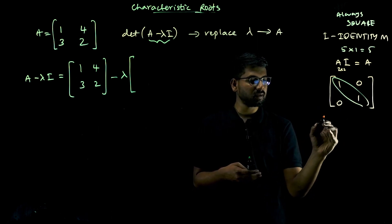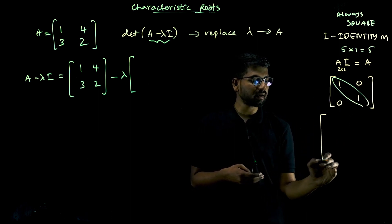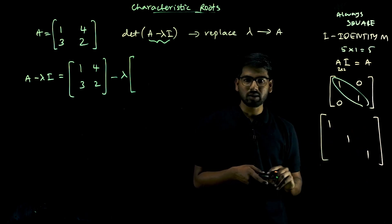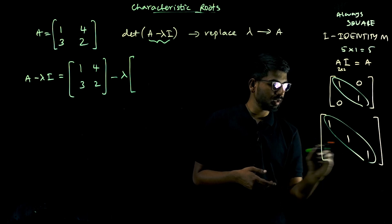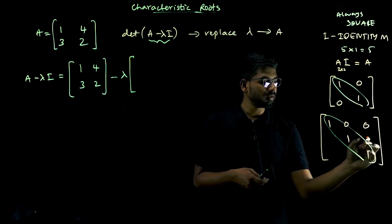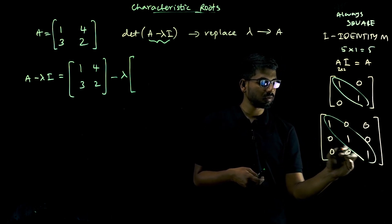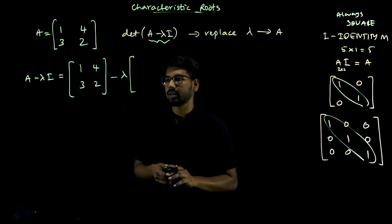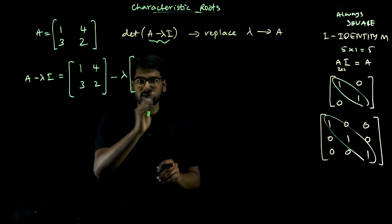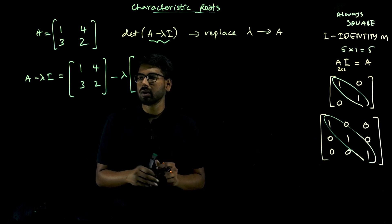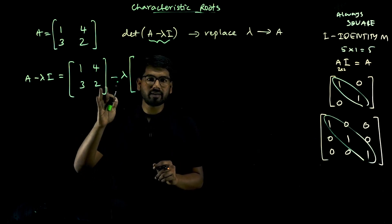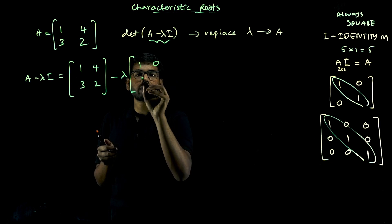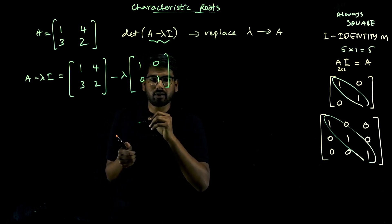If A is a 3×3 matrix, then I is a 3×3 identity matrix — only the principal diagonal elements are 1 and all other elements are zero. To subtract two matrices, their orders must be the same. Since A is 2×2, we use a 2×2 identity matrix.